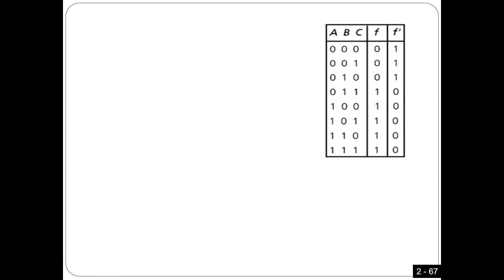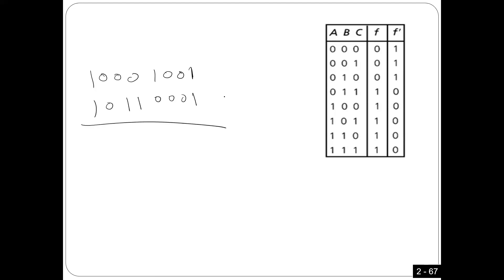Looking at the graded quizzes, there are a couple of things I want to address before starting chapter three. One thing: students are still confused about overflow. Let me solve this. Here's the question we had on the quiz: 1000 plus 1001 added to 1000 plus 1110 — let me do the addition.